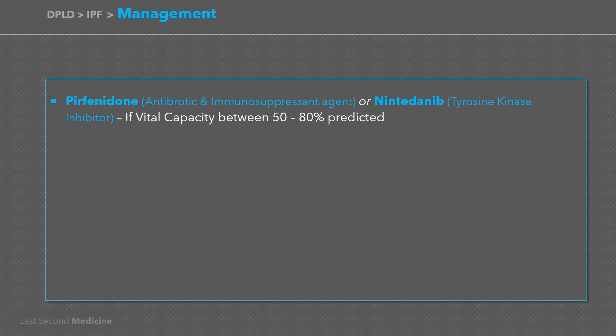Management options for idiopathic pulmonary fibrosis are improving. If the vital capacity is between 50% and 80% predicted, the patient may be offered either pirfenidone, an anti-fibrotic agent, or nintedanib, a tyrosine kinase inhibitor. Both agents reduce the rate of decline in lung function. Patients taking pirfenidone should avoid direct sunlight and use photoprotective clothing and high-protection sunscreens. Nintedanib may cause diarrhea. Neither drug improves cough or breathlessness, and treatment should be discontinued if lung function declines by more than 10% over the first year.